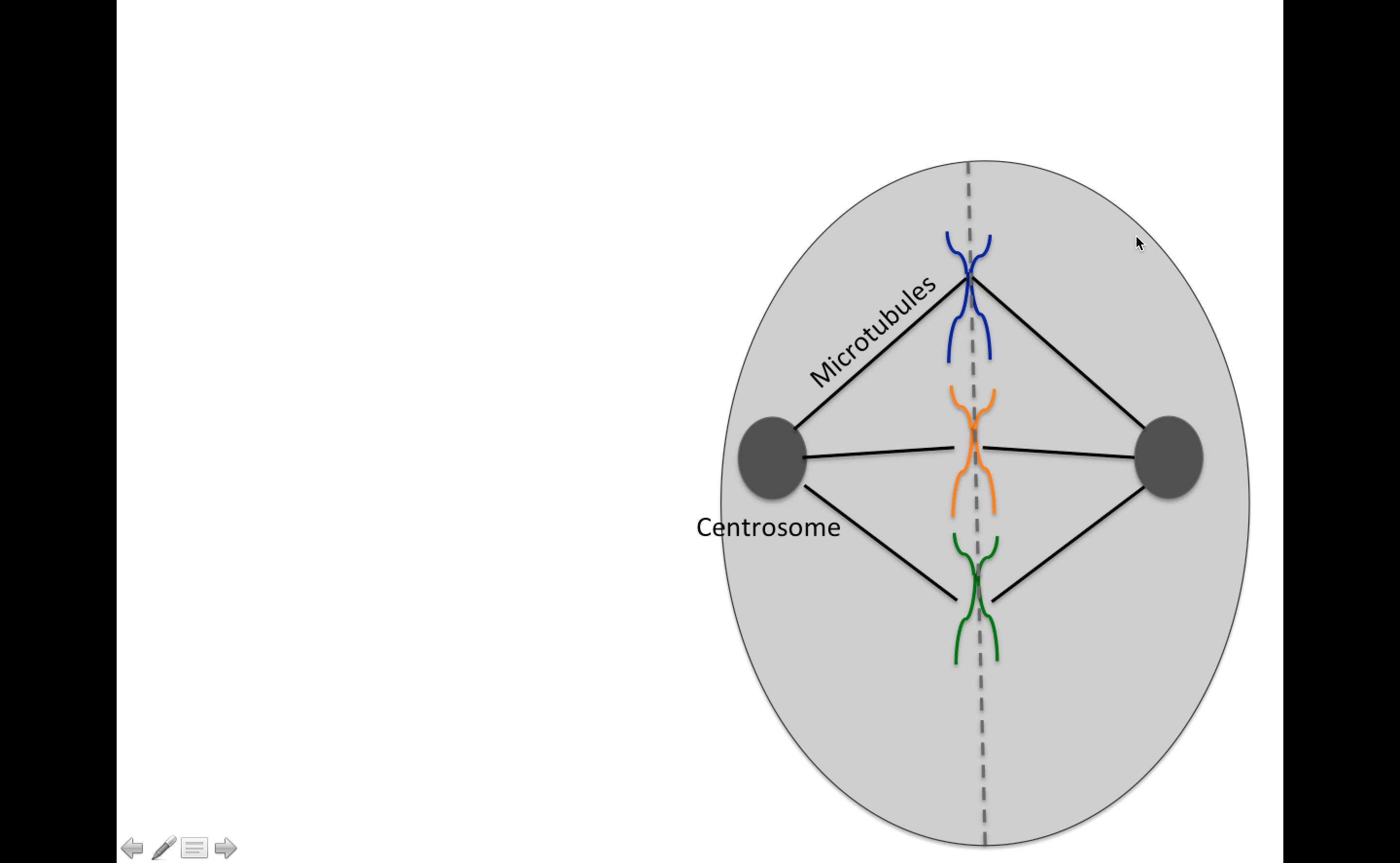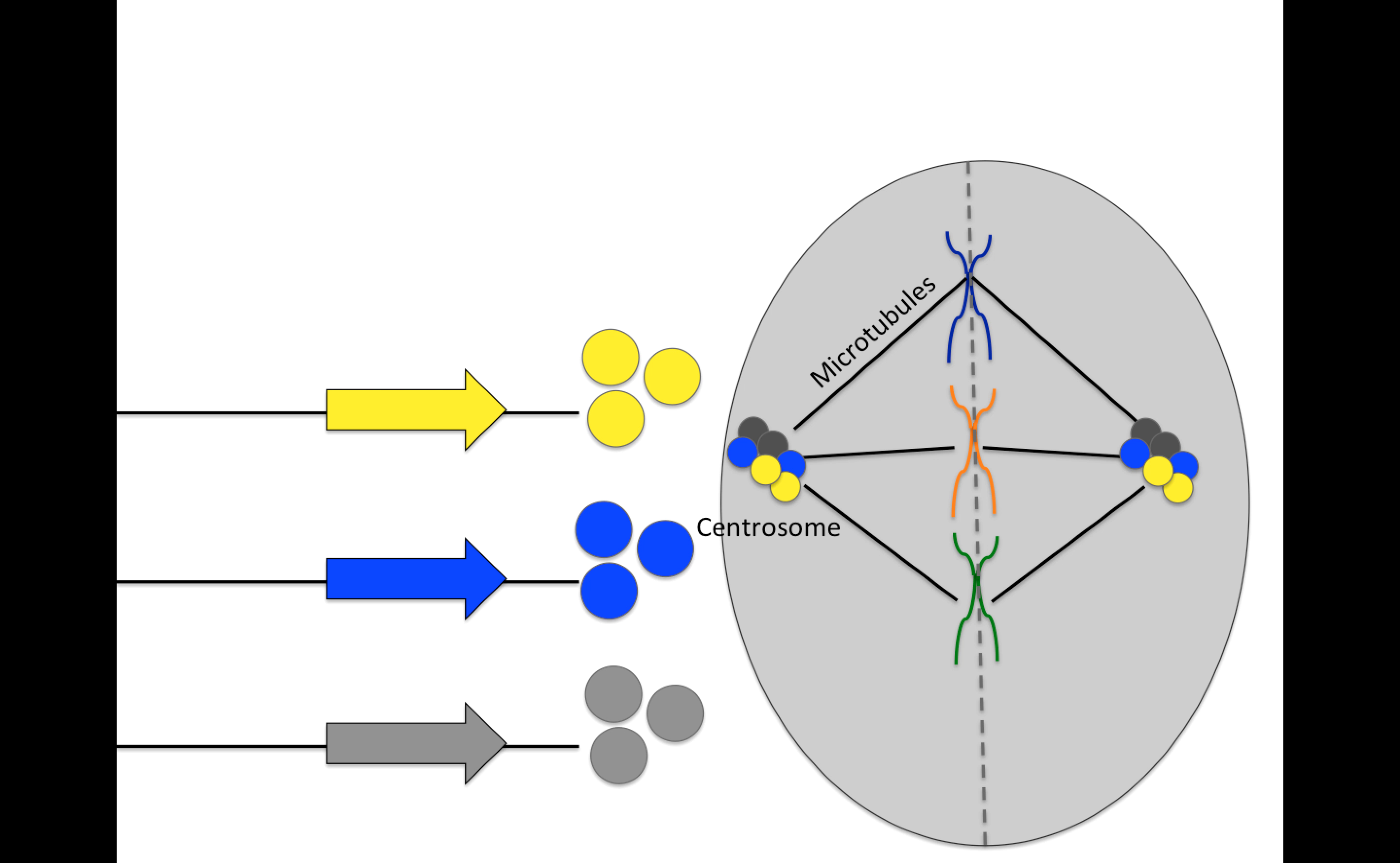And so if we're looking at a dividing cell here in mitosis, we see that we have these machines, microtubules and centrosomes. And it's worth remembering that these are made up themselves of proteins, which are encoded by genes.